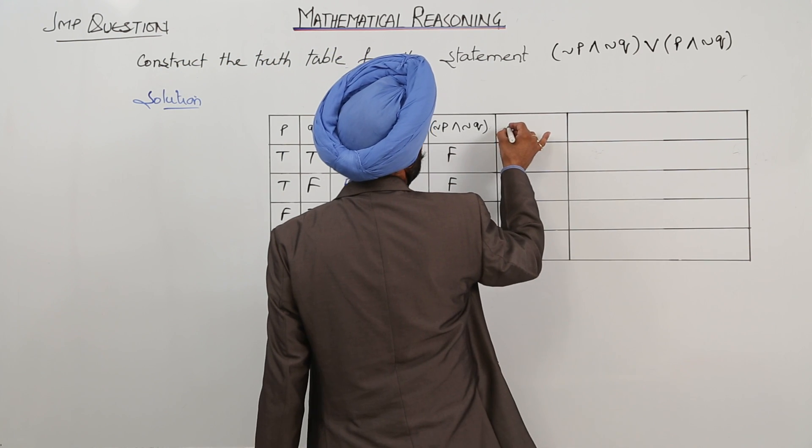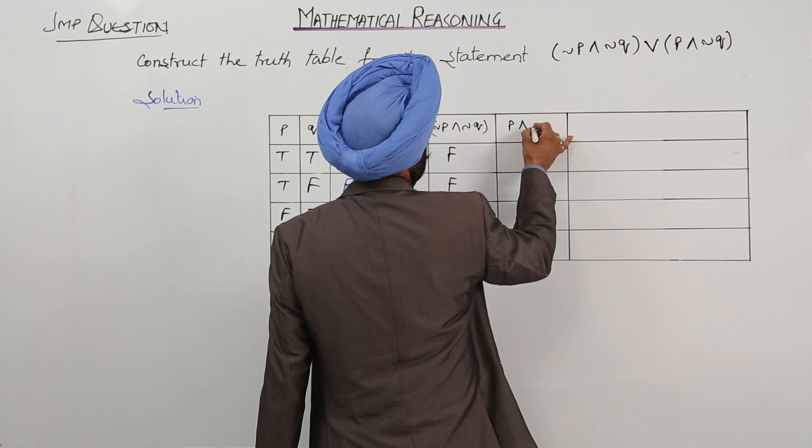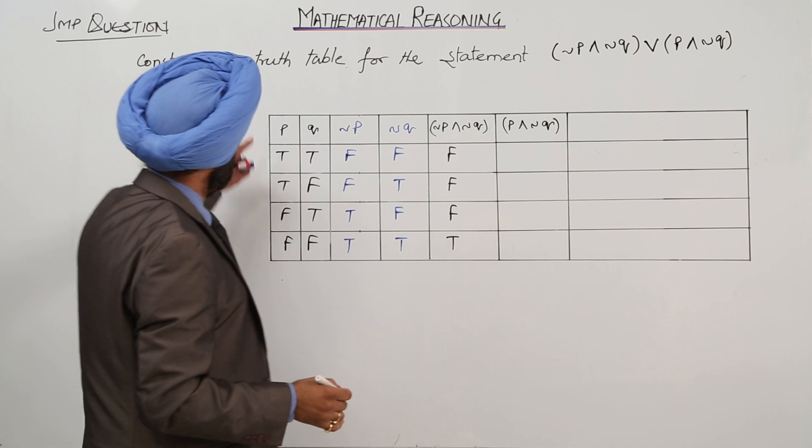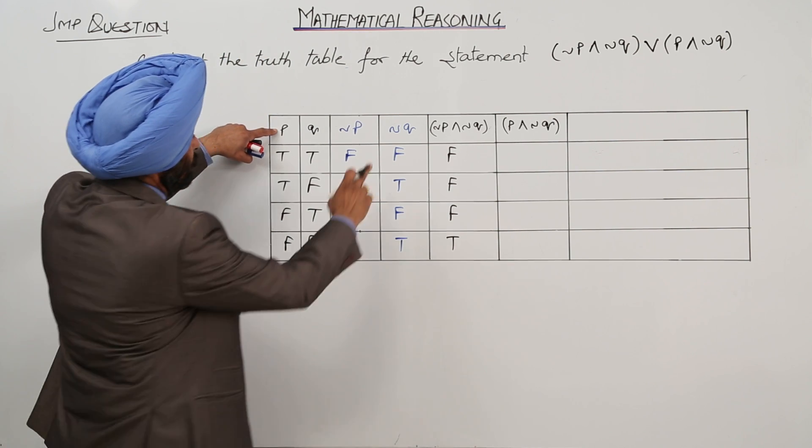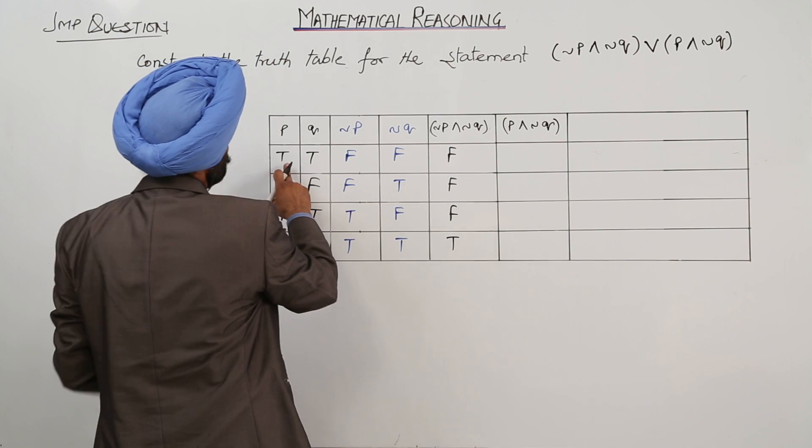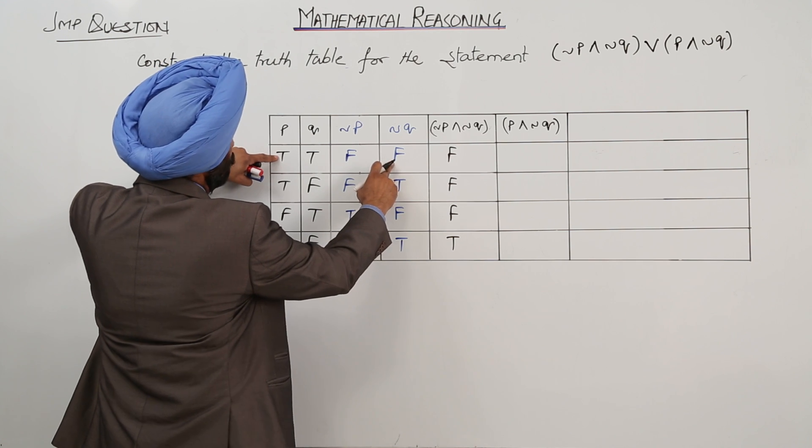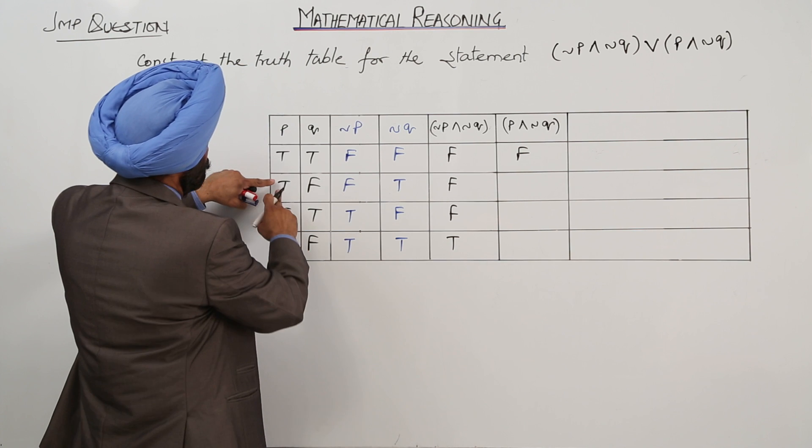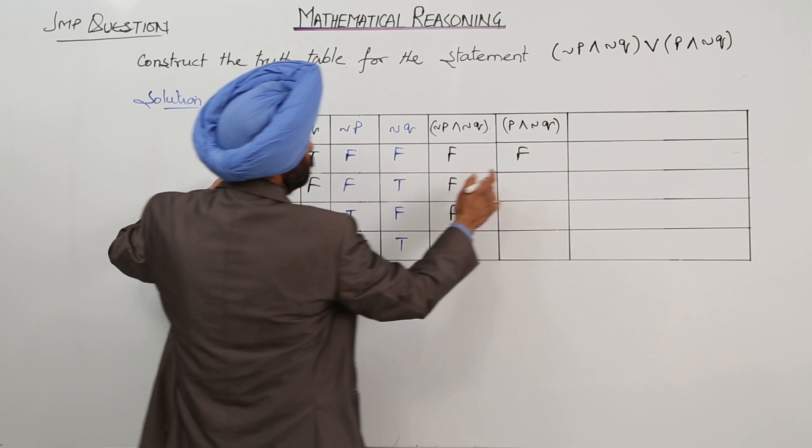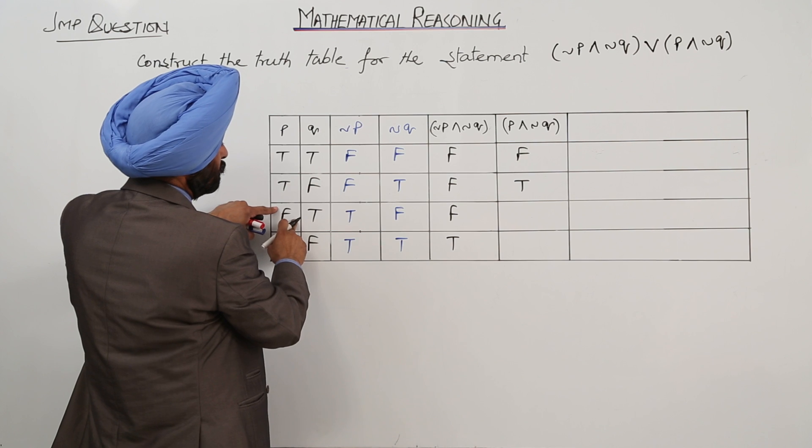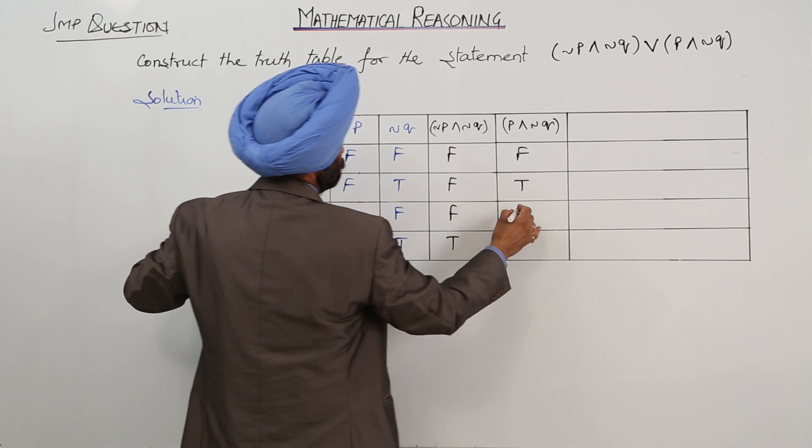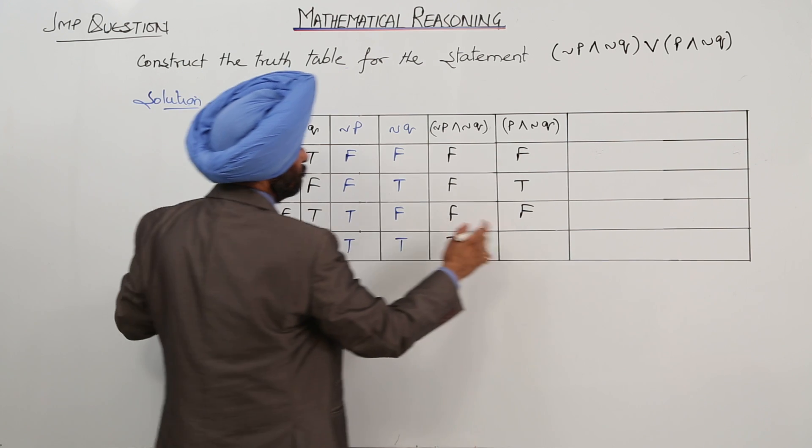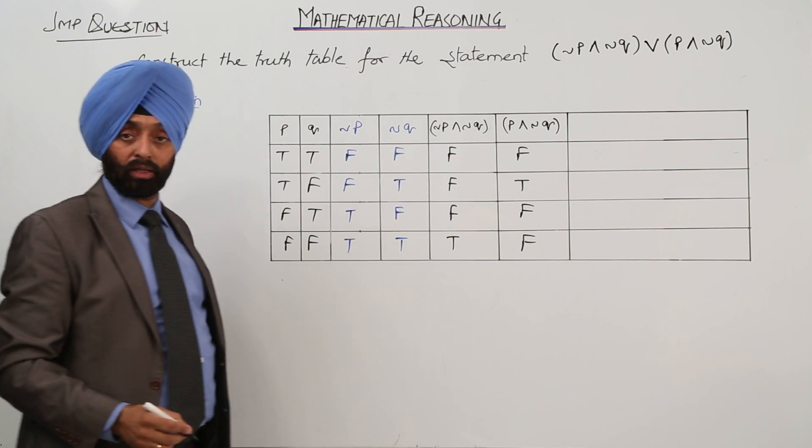Then we are having P and negation of Q. Now here we are going with P with this one and with this one. So true and false: false, true, true, true, false, false, false, false, true, false.